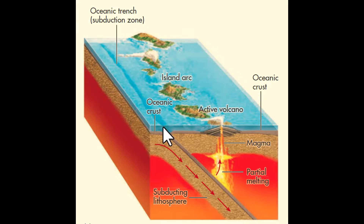An oceanic trench forms as the subducting plate moves down. Sediments and slices of oceanic crust collect in the trench. This sheared scrap of material generally remains completely submerged.